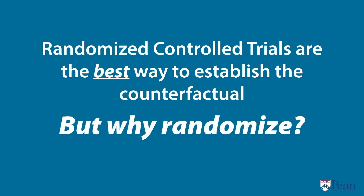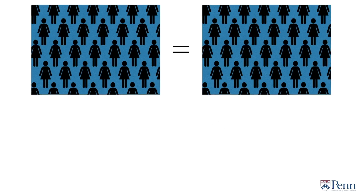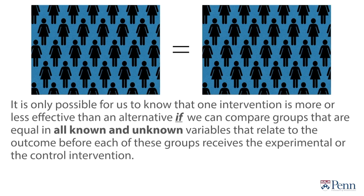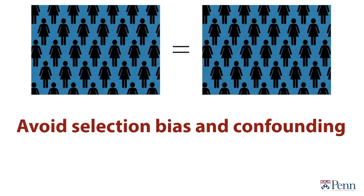But why do we have to randomize? It is only possible for us to know that one intervention is more or less effective than an alternative if we can compare groups that are equal in all known and unknown variables that relate to the outcome before each group receives the experimental or control intervention. A shorter way of saying that: we have to avoid selection bias and confounding.